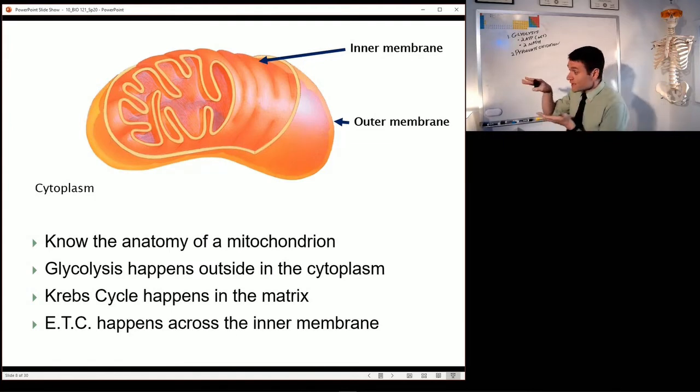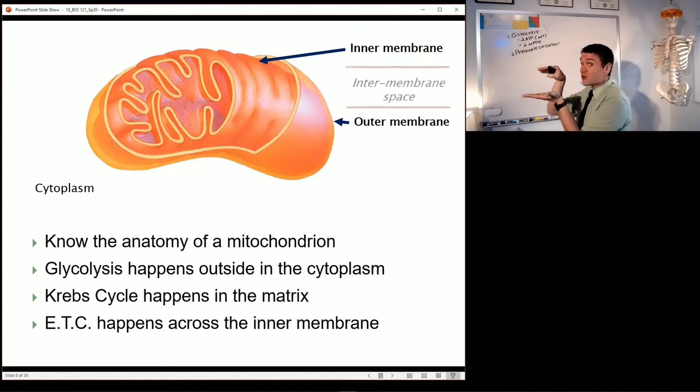Now in between these two membranes there's a little gap, there's a little pocket of space, and that's going to come up later on. So that space in between the two membranes is called the intermembrane space. Hey, this thing is starting to look pretty simple here. Now there's some more parts you're going to want to know about.